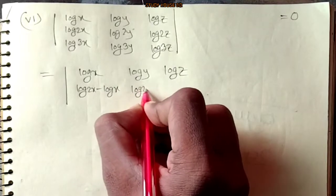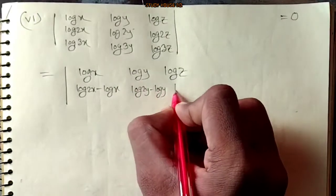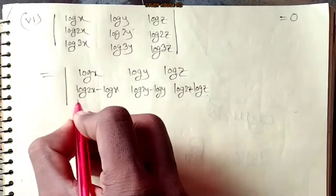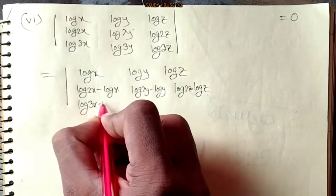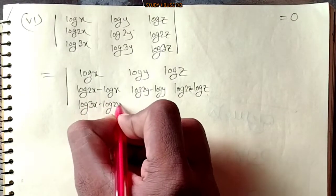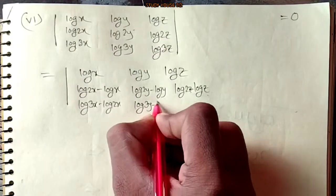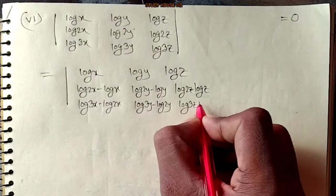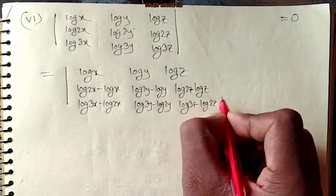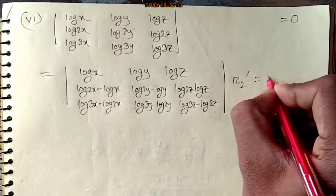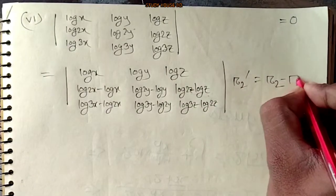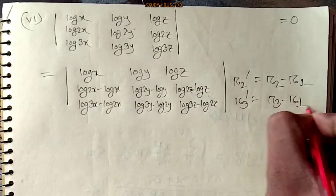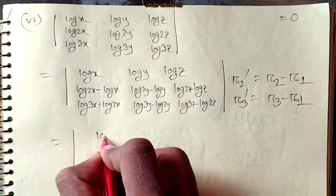Log 2y minus log y. Log 2z minus log z. Log 3y minus log 2y. Log 3z minus log 2z. R2 prime, R2 minus R1. R3 prime.